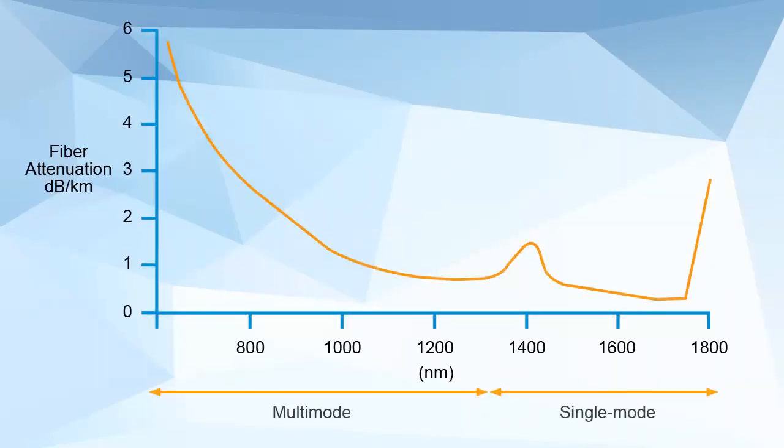As the light signal traverses the fiber, it decreases in power level. The decrease in power level is expressed in decibels or as a rate of loss per unit distance.